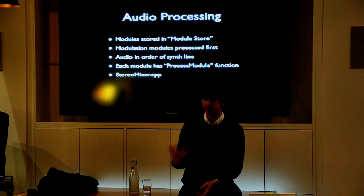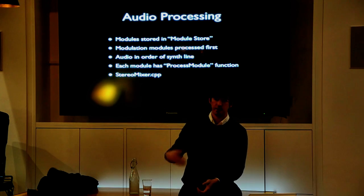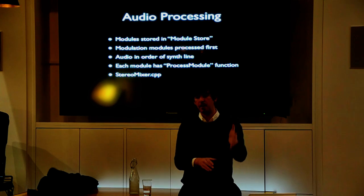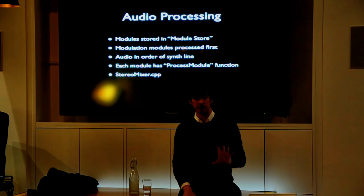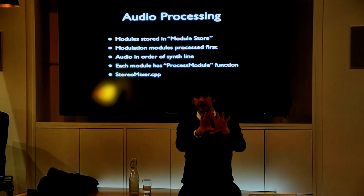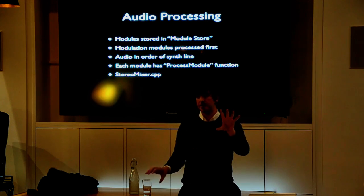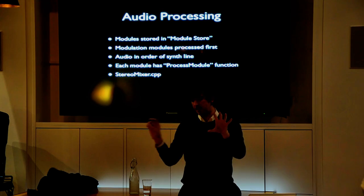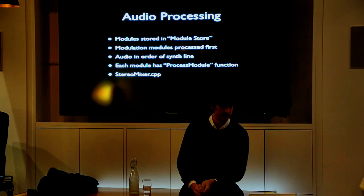It makes sense that modulations are processed first — all the sine wave generators, envelopes, and so on. Then we do the audio line in order as shown on the interface. All the oscillators produce their sounds, which are written into pointers connected to other parts of the audio library, then processed in the filter and mixer, and out to the VCA and into the host or your sound card. Every module has a process module function.